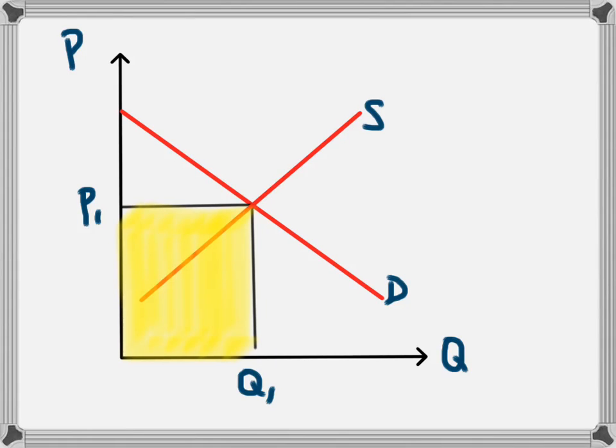This video is going to look at the concept of consumer surplus using a supply and demand diagram. In this diagram we end up with an equilibrium price of P1 and an equilibrium quantity of Q1. The business receives revenue equal to the yellow shaded area. If you're not sure about why that is and you would like to understand it, there's a video on this channel called business revenue.